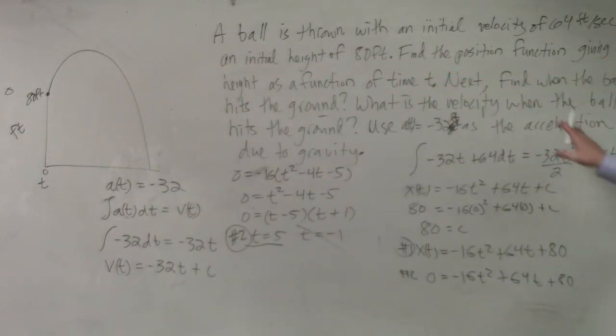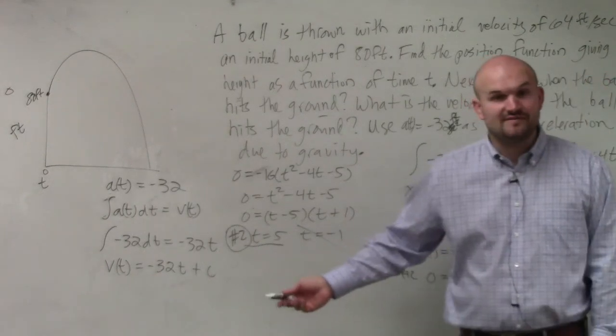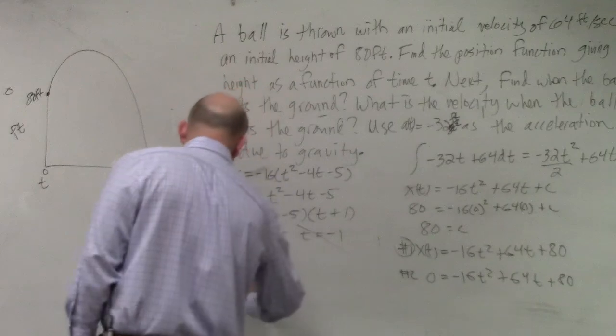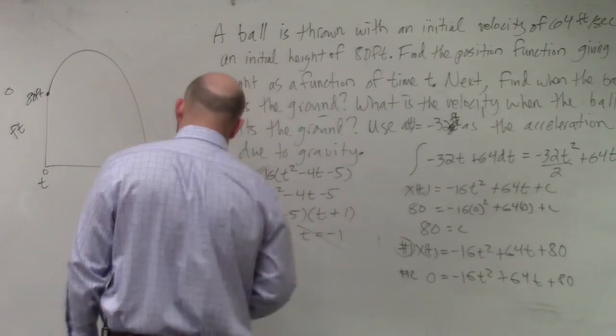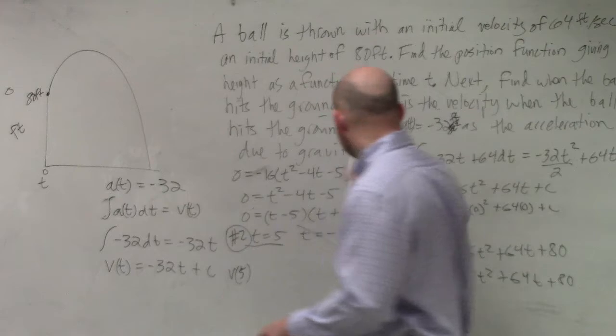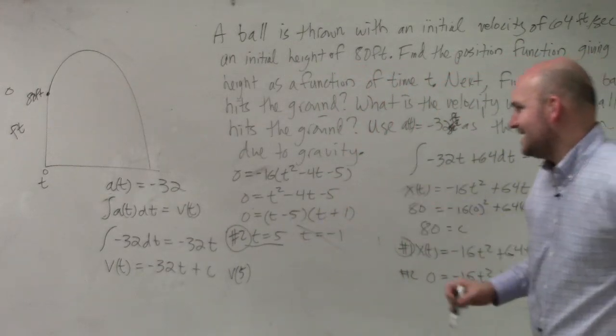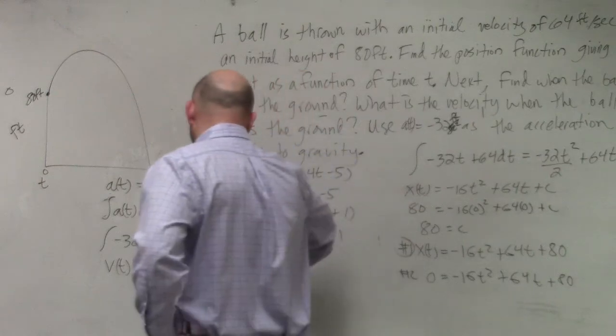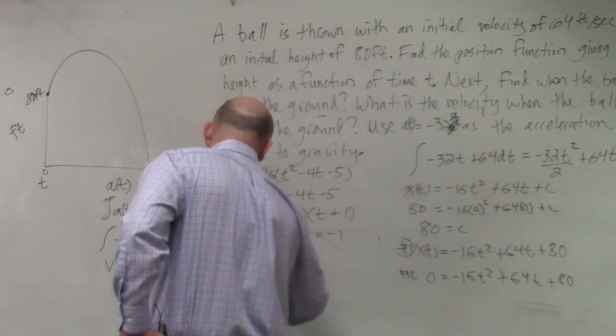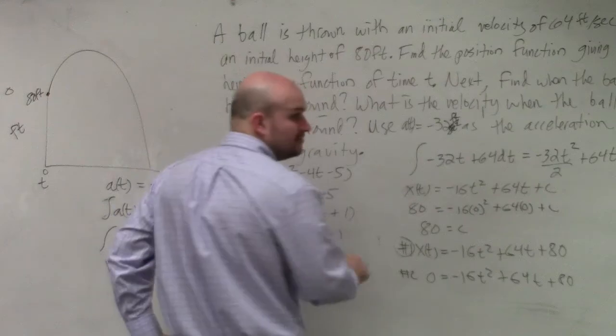And then, last but not least, is what is the velocity when the ball hits the ground? Well, it hits the ground at t equals 5, so now I need to evaluate for v sub 5. And of course, the line that I deleted was my velocity function, which was what? Negative 32. So v sub t equals what? Negative 32. Plus 5.